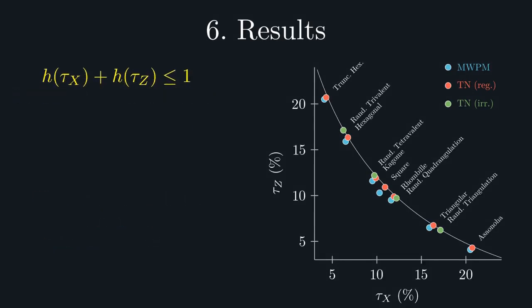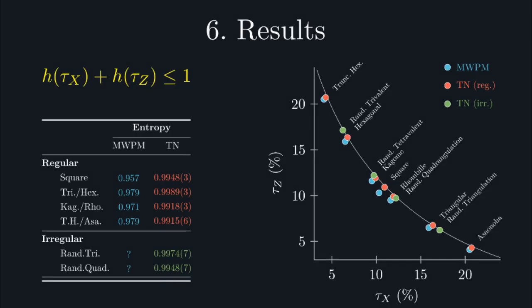To quantify this, we can look at the entropies associated with these points, finding our data to be in very strong agreement with the conjectured bound of 1.